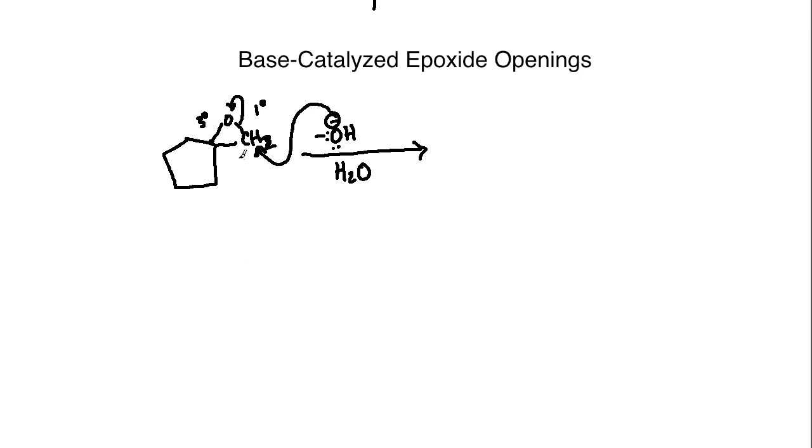Notice in the base-catalyzed reaction that we do not have any type of protonation of the oxygen before the ring opens. It's simply an attack that's going to occur and the ring will open. Moving down to the intermediate, once the base has attacked and attached itself, I'm left with an intermediate where I have a charged oxygen species and the addition of the base to the less hindered position. In this case, I've got an alcohol group that has formed off to the side here.